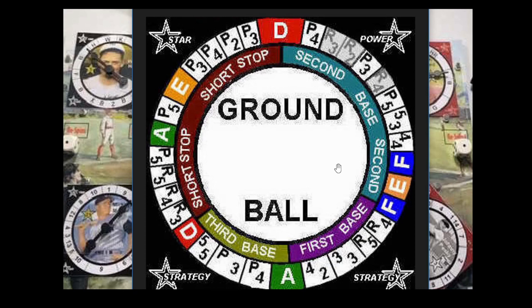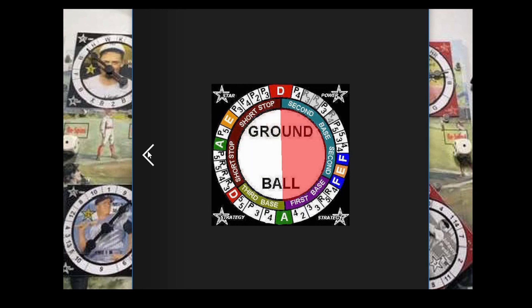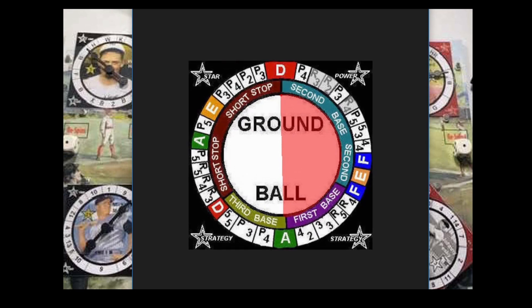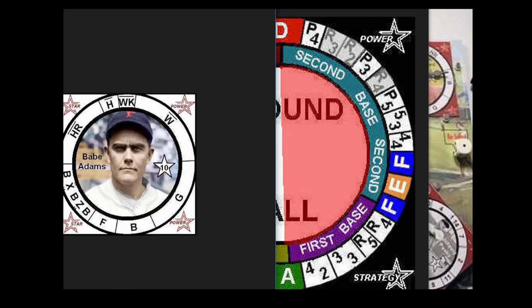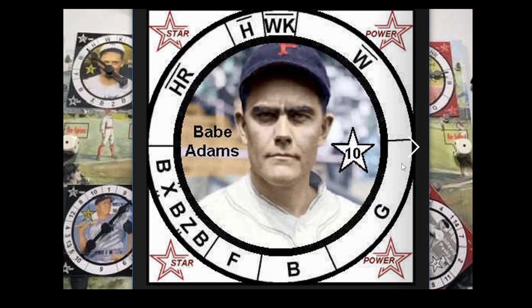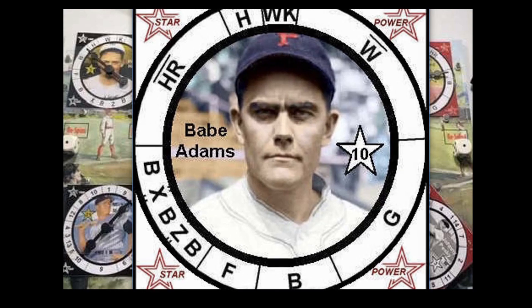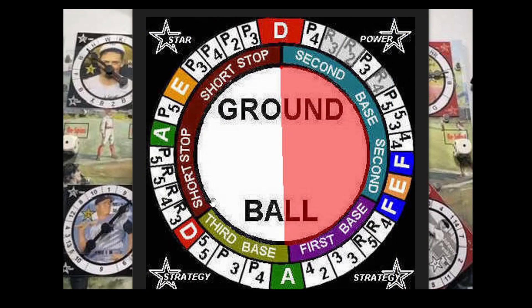When there are runners on base, the error spin no longer takes place. We will then use what we call a location spin, and the location spins are pretty simple. Let's go back to ground ball anywhere, which would be your pitcher's G — that big G space on Babe Adams right there, that is a ground ball anywhere. When you have the ground ball anywhere, it'll be any of these inner circle positions happening: lands on shortstop goes to the shortstop, second base, first, etc.